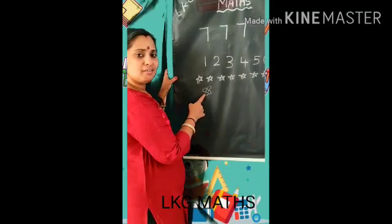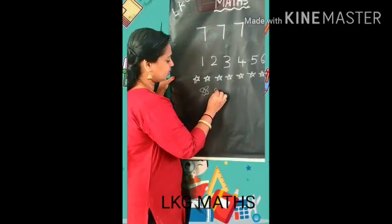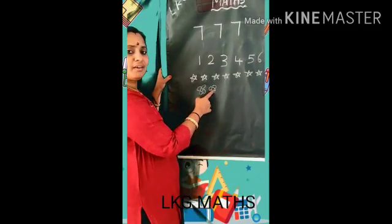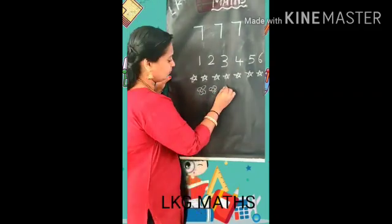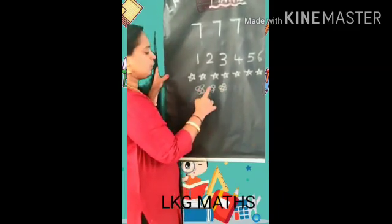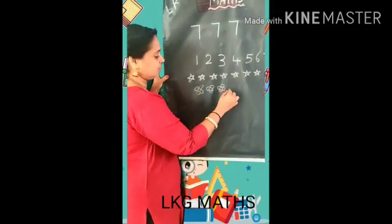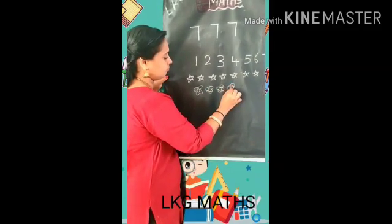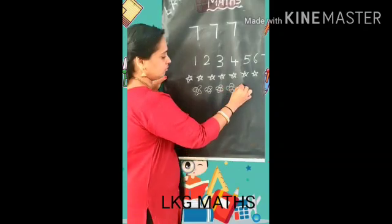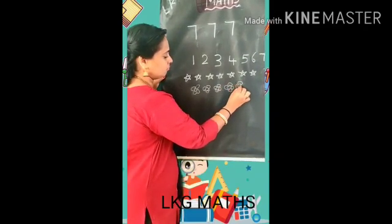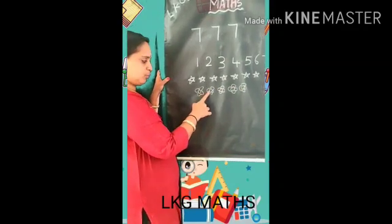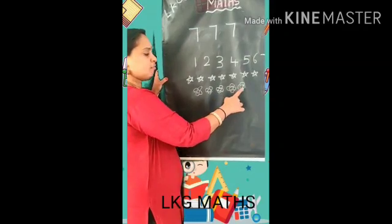How many flowers? 1 flower. How many flowers? 1, 2 — 2 flowers. How many flowers? 1, 2, 3. How many flowers? 1, 2, 3, 4. How many flowers are there? 1, 2, 3, 4, 5.